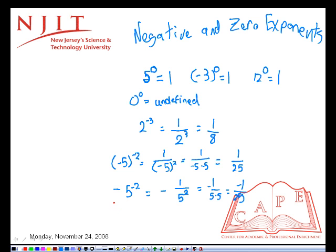Finally, with fractions. Two-thirds to the negative three is the reciprocal of two-thirds to the power of three. We'll discuss how to take the exponent of a fraction in a later podcast.